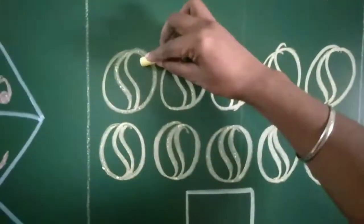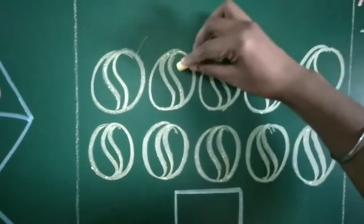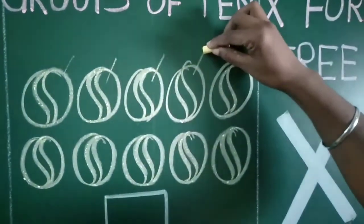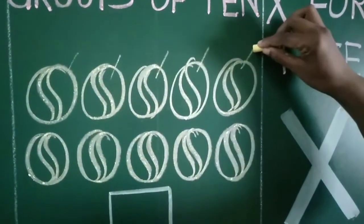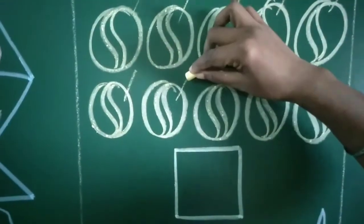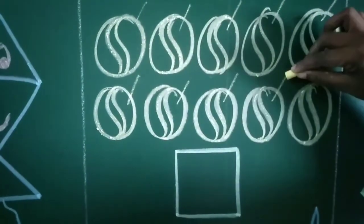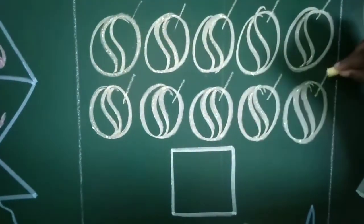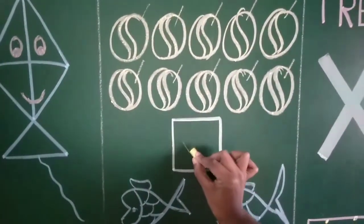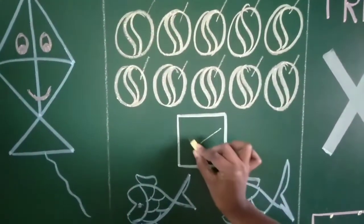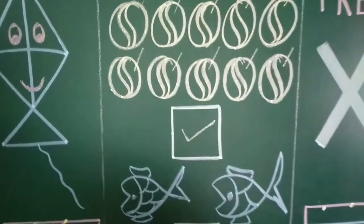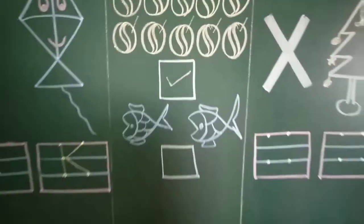See — let's count: one, two, three, four, five, six, seven, eight, nine, ten. So we can make a tick here because there are ten balls. How many balls? Ten balls.